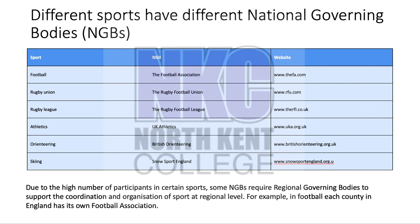Different sports have different national governing bodies. Football has the FA, rugby has the RFU, rugby league has the RFL, athletics has UK Athletics, orienteering has British Orienteering, and skiing is part of Snow Sports England — with relevant websites available if you want to investigate further. Due to the high number of participants in certain sports, some national governing bodies require regional governing bodies to support, coordinate and organise the sport at a regional level. For example, in football, each county in England has its own football association.